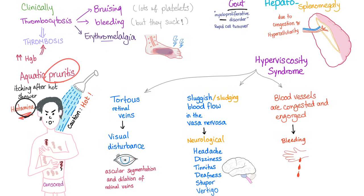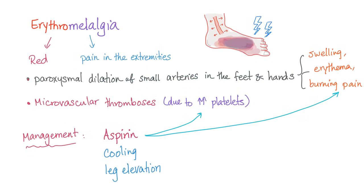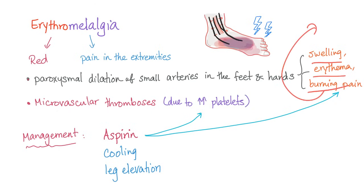Gout occurs because myeloproliferative disorder has rapid cell turnover leading to increased uric acid. Hepatosplenomegaly is due to congestion, hypercellularity, and extramedullary hematopoiesis — the bone marrow is working so hard it needs help from extramedullary sites, meaning the spleen. Erythromelalgia: erythro means red, melalgia means pain in the extremities. There is paroxysmal dilation of small arteries in the feet and hands, leading to swelling, erythema, and burning pain.